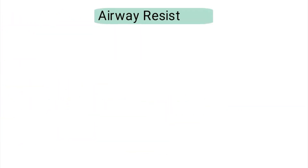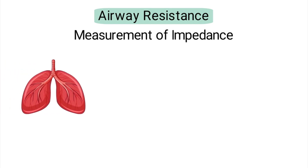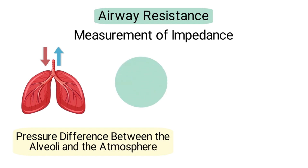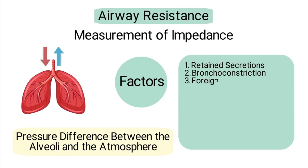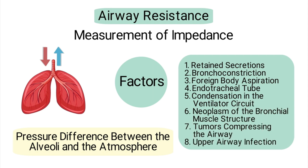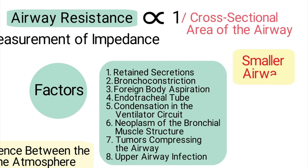Next up is airway resistance. Airway resistance is a measurement of impedance to the movement of air through the respiratory tract during inspiration and expiration. It is determined by the pressure difference between the alveoli and the atmosphere. Factors that can affect airway resistance include retained secretions, bronchoconstriction, foreign body aspiration, an endotracheal tube, condensation in the ventilator circuit, neoplasm of the bronchial muscle structure, tumors compressing the airway, and an upper airway infection. Airway resistance is inversely proportional to the cross-sectional area of the airway, meaning a smaller airway has greater resistance than a larger one.